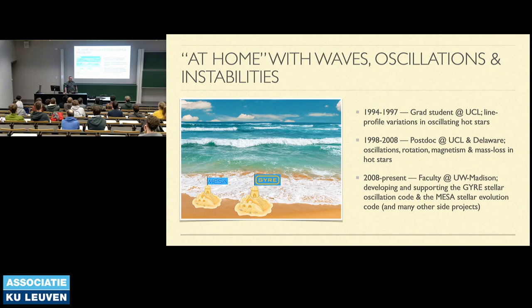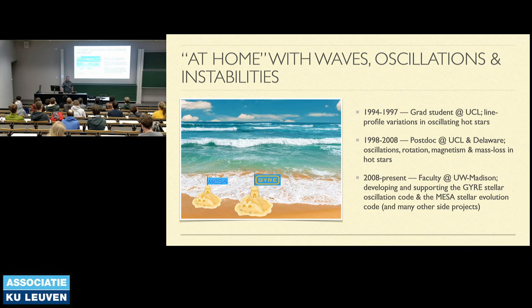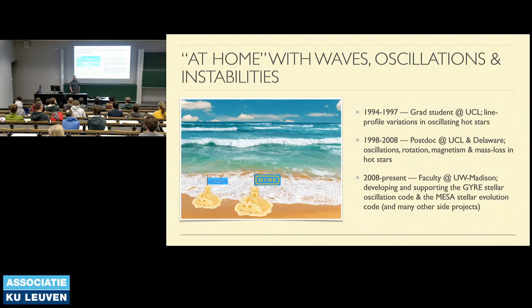A big focus of my research since I've been at Madison has been developing the GYRE stellar oscillation code and the MESA stellar evolution code. MESA constructs a model for a star and simulates how it changes over time from birth to death. GYRE takes a model produced by MESA and figures out how it will oscillate, and we can use GYRE's output to compare against observations. Asteroseismology is really one of the things that Leuven is world famous for.